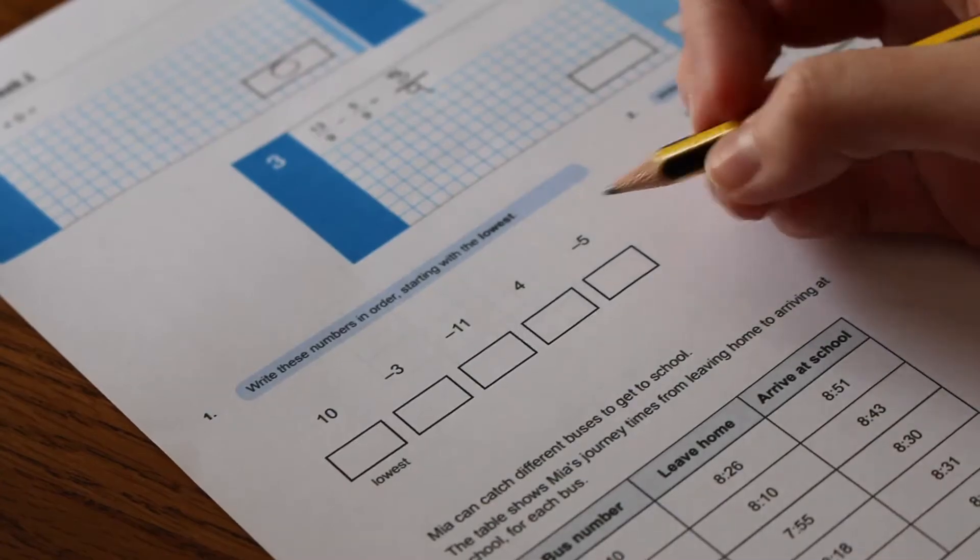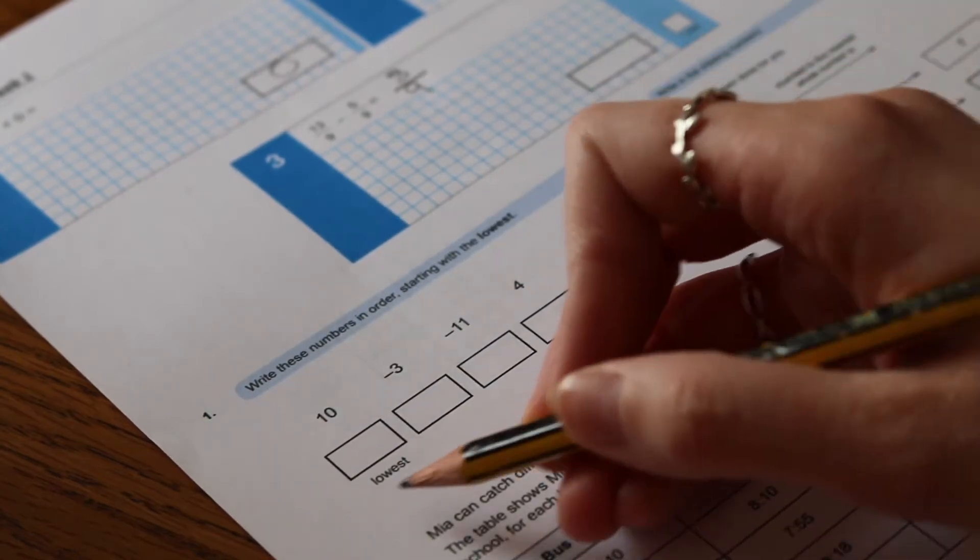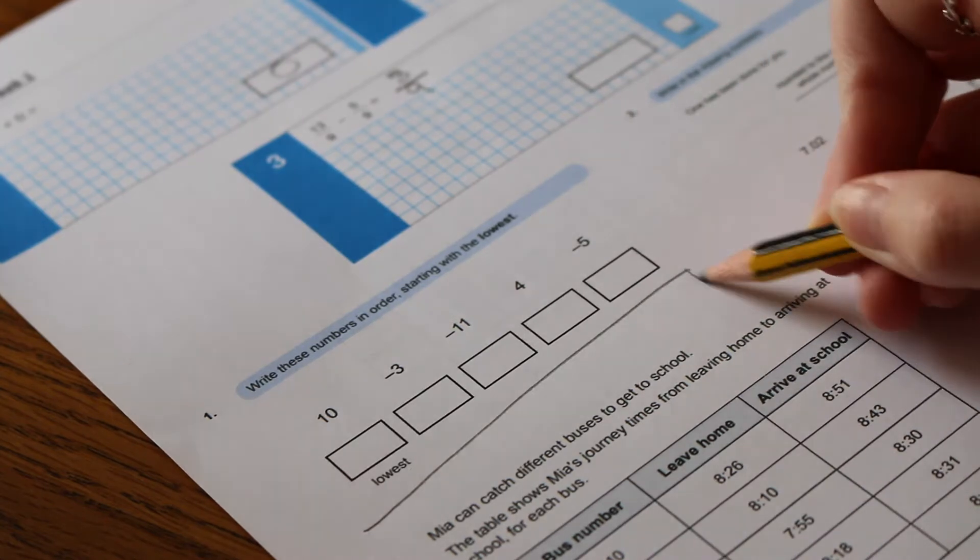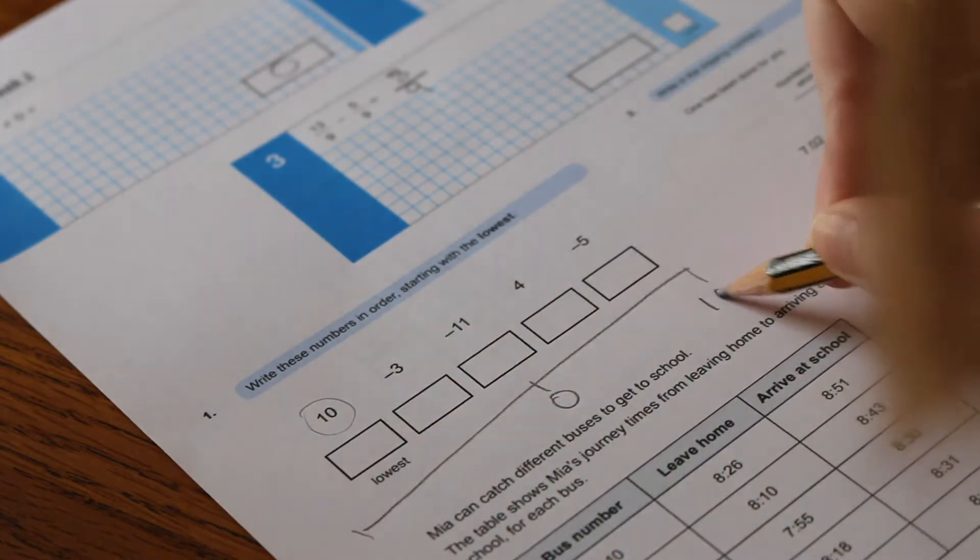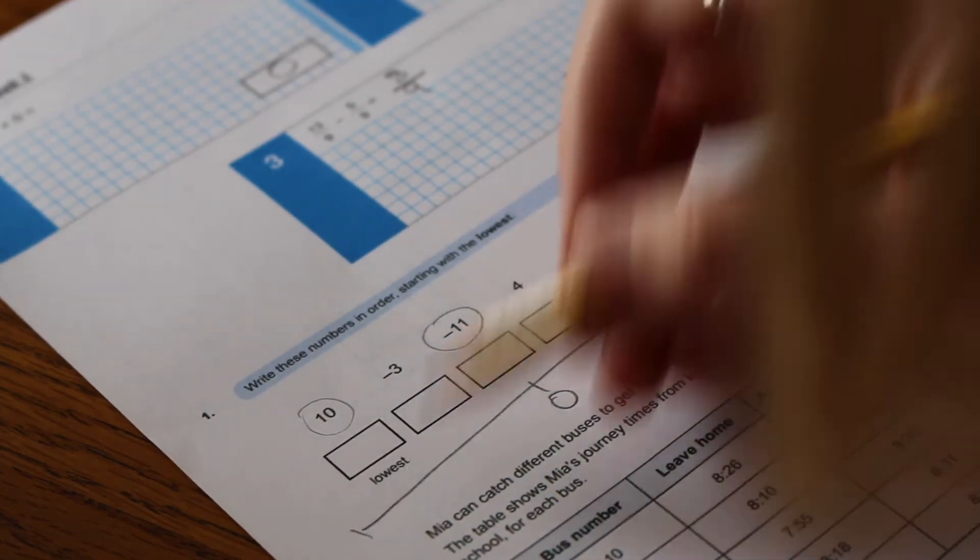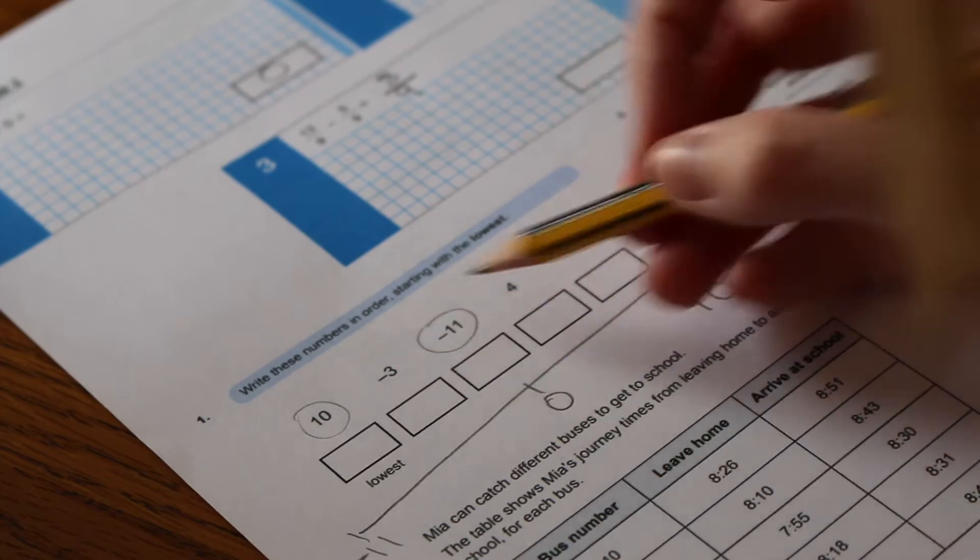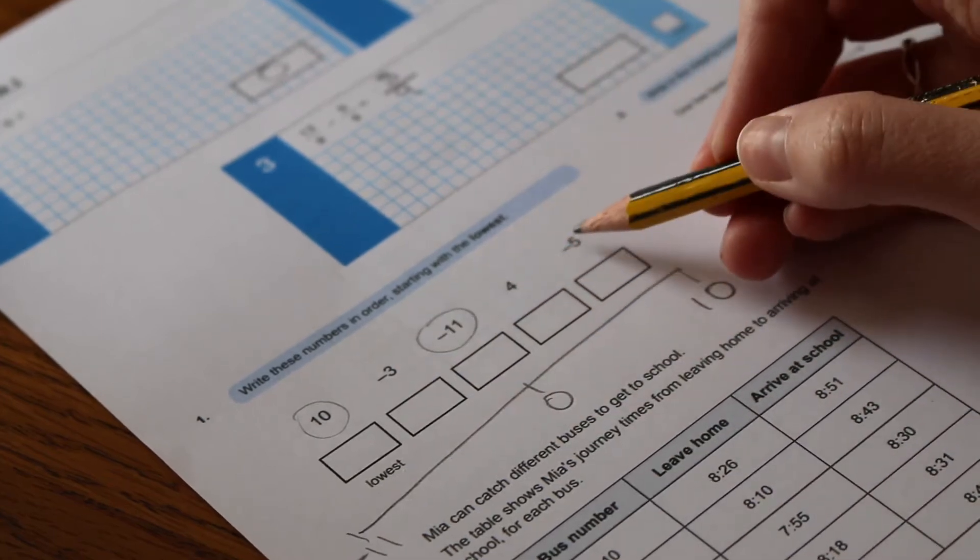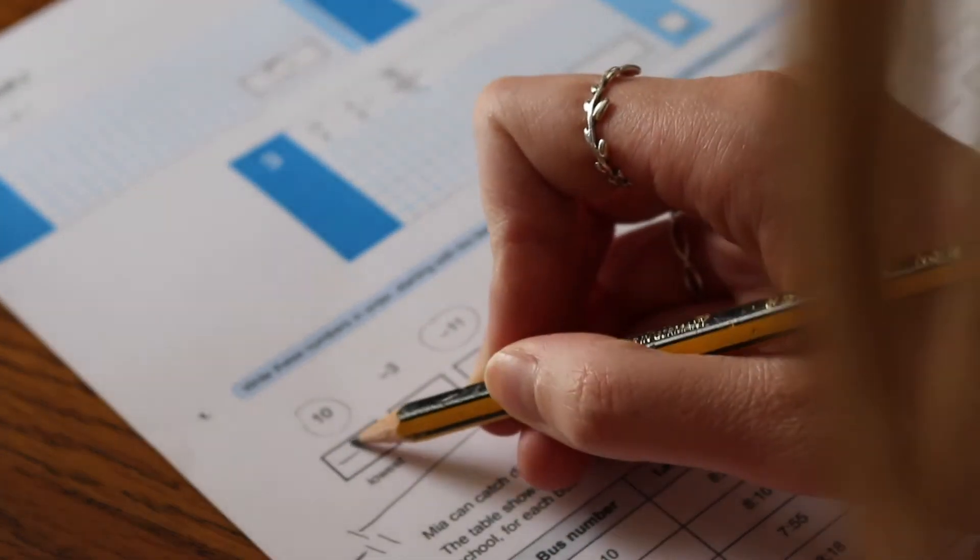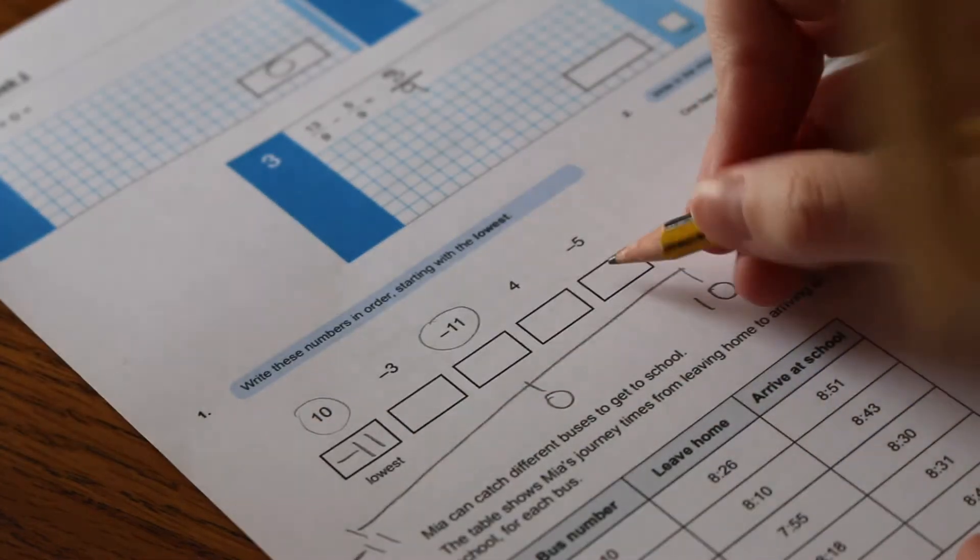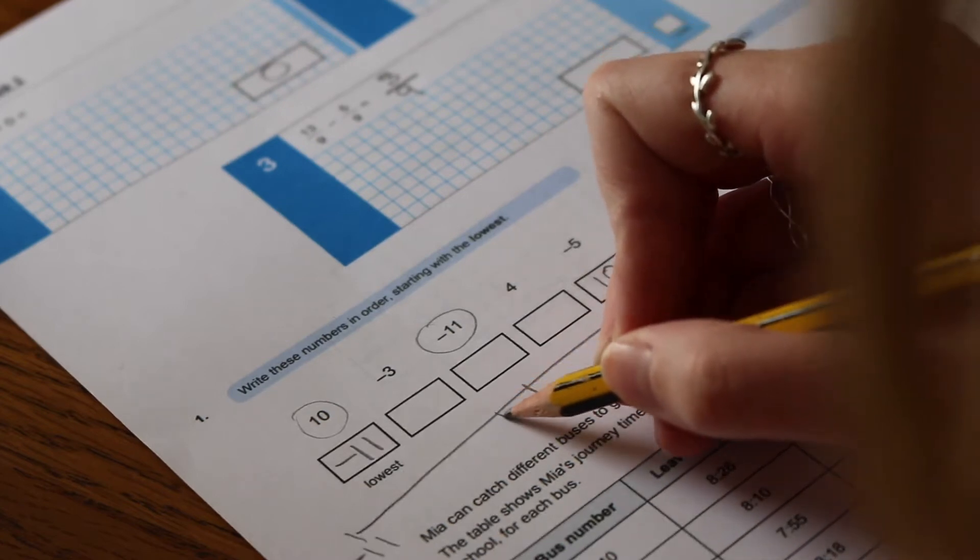Moving on to some of our reasoning questions now, so it might help you with this one if you draw a number line. So we draw our number line, we've got 0 here. We know that positive 10 is the biggest and minus 11, negative 11 is the smallest. So then we need to fit negative 3, 4, positive 4 and negative 5 in there. So if this is the lowest number, then in this box we know it's negative 11, and this is the highest number, this is positive 10.